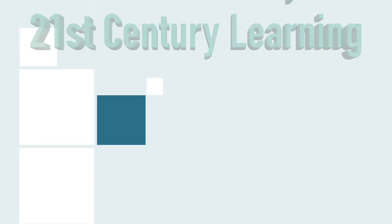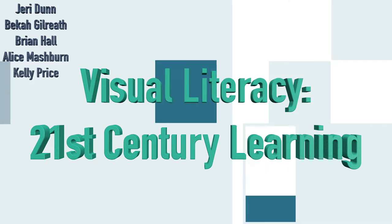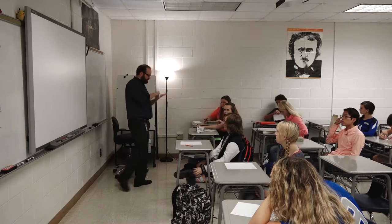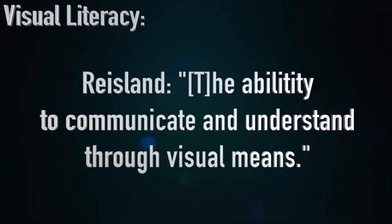Alright, someone raise your hand and tell me, what is visual literacy? Trevor? You can look at something and tell them what's going on in the emotional scene. So it lets you understand, it gives you another way to view something, another way to understand something. You're seeing it visually. You can see things like emotions. Author Aaron Rislin loosely defines the field of visual literacy as the ability to communicate and understand through visual means.